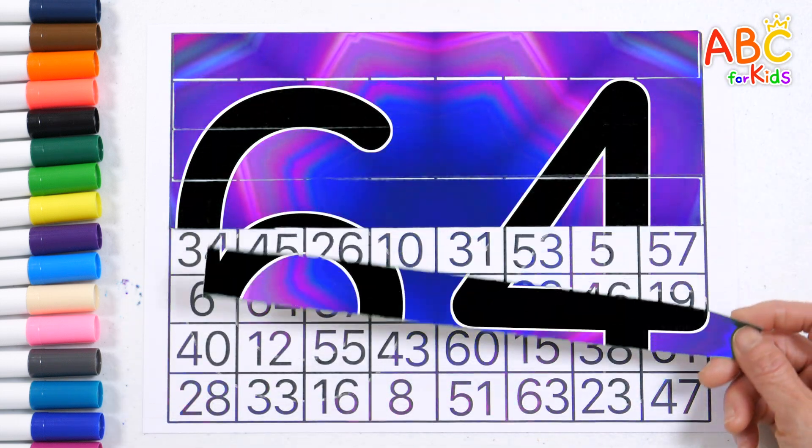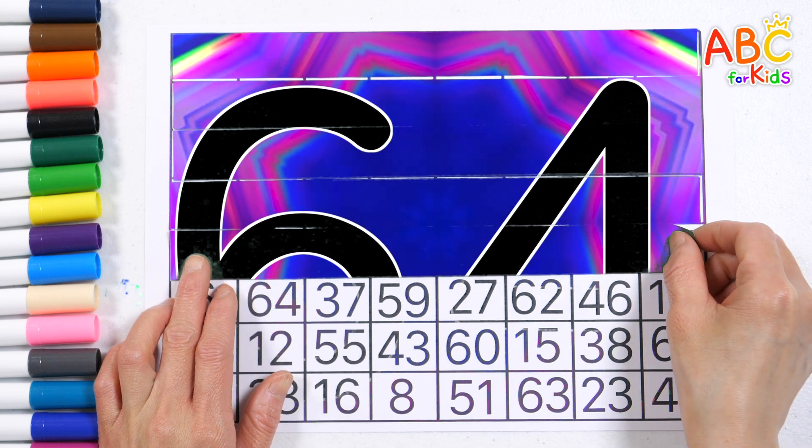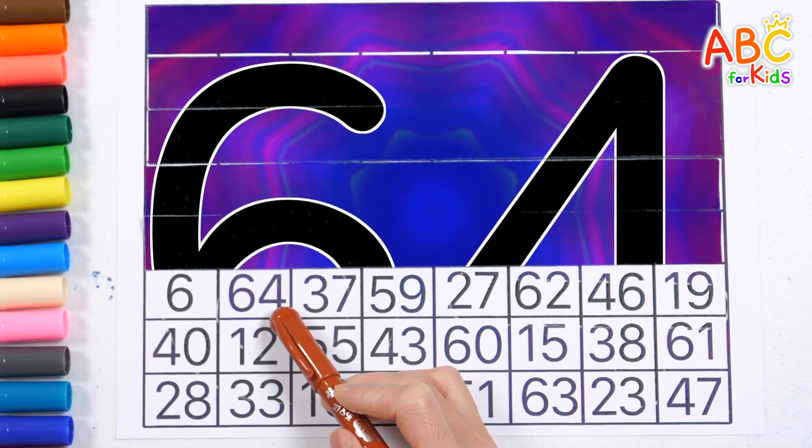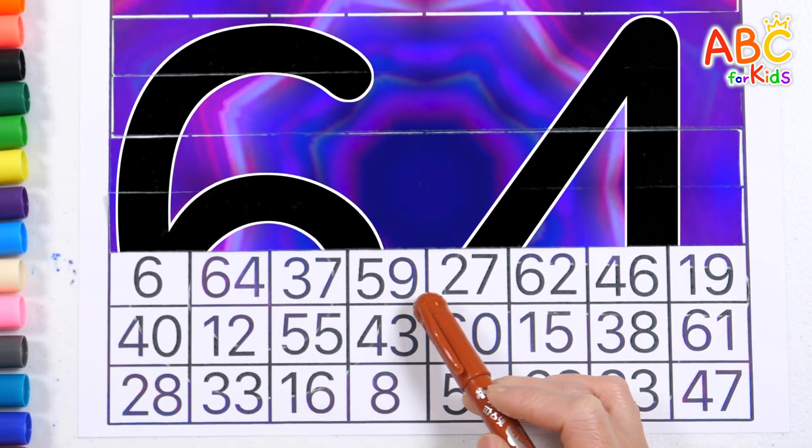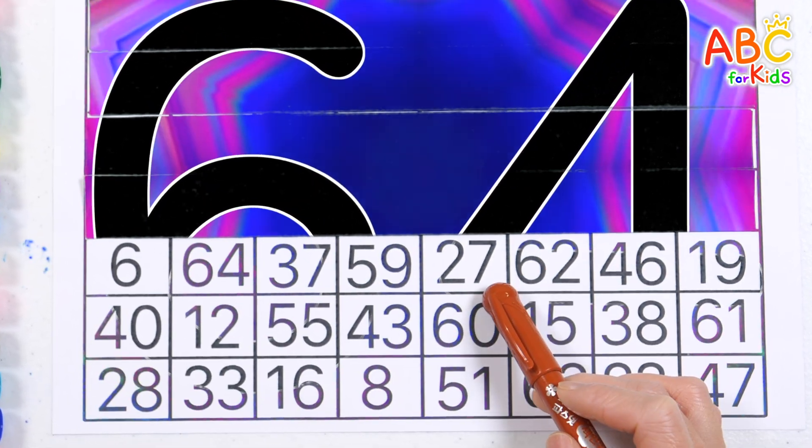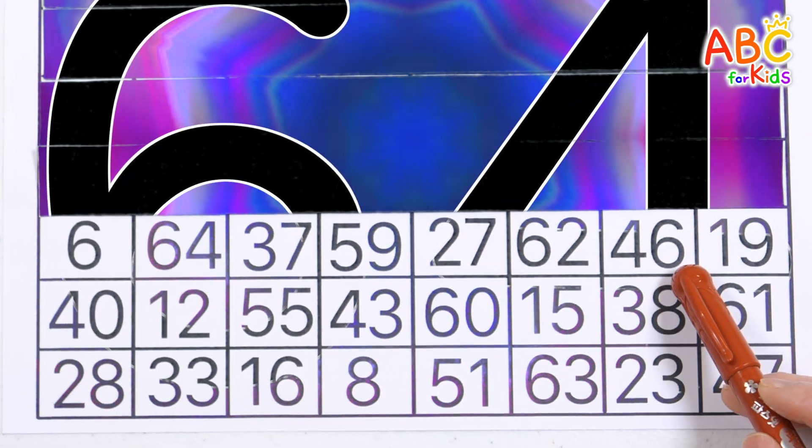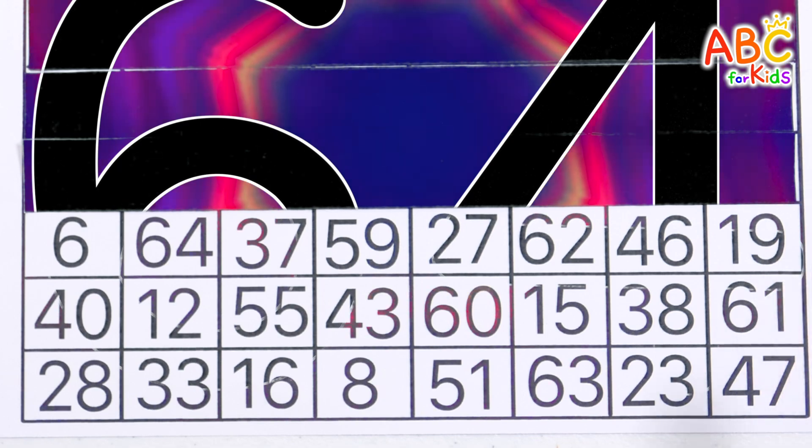What numbers do you see behind the magic bar? 6, 64, 37, 59, 27, 62, 46, 19. Good job!